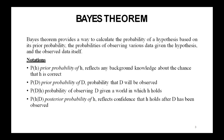In machine learning problems, we are interested in P(H|D), the probability that H holds given the observed training data D. P(H|D) is called the posterior probability of H, because it reflects our confidence that H holds after we have seen the training data D. The posterior probability P(H|D) reflects the influence of the training data D, in contrast to the prior probability P(H) which is independent of D.